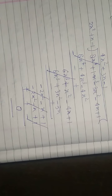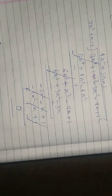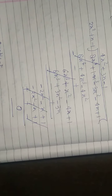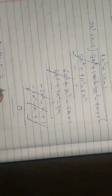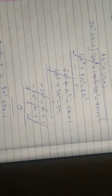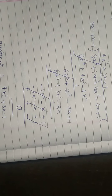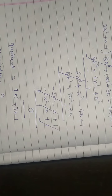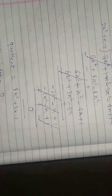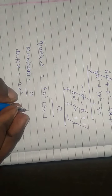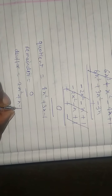Okay, students. So here: quotient is 4x² + 3x − 1. And remainder is zero. And divisor is 2x² + x − 1.